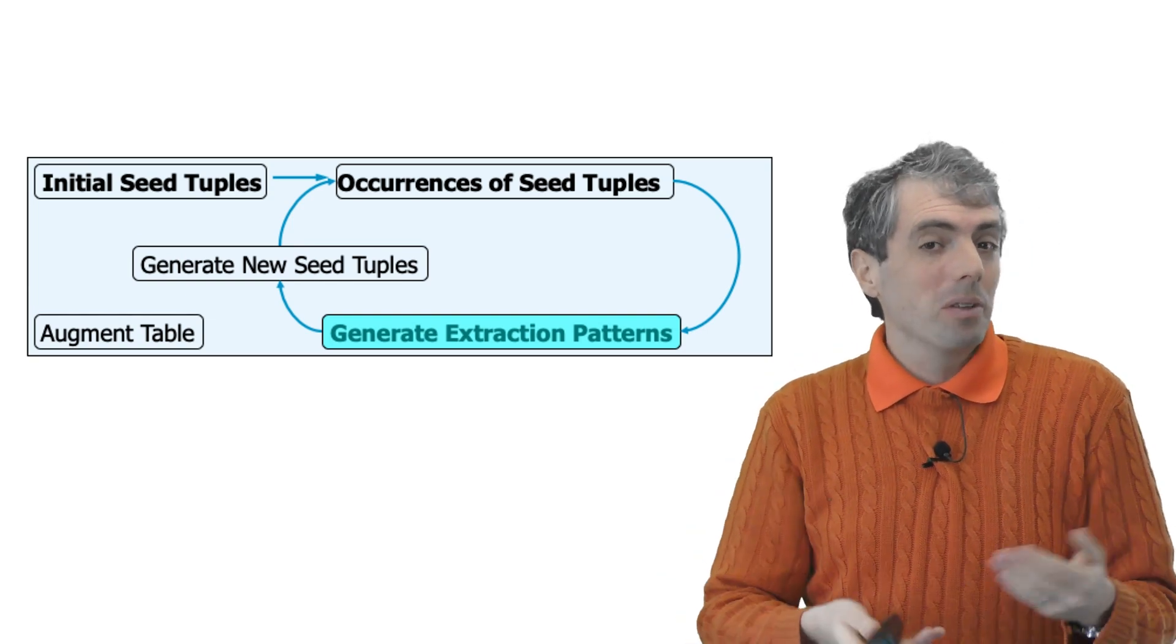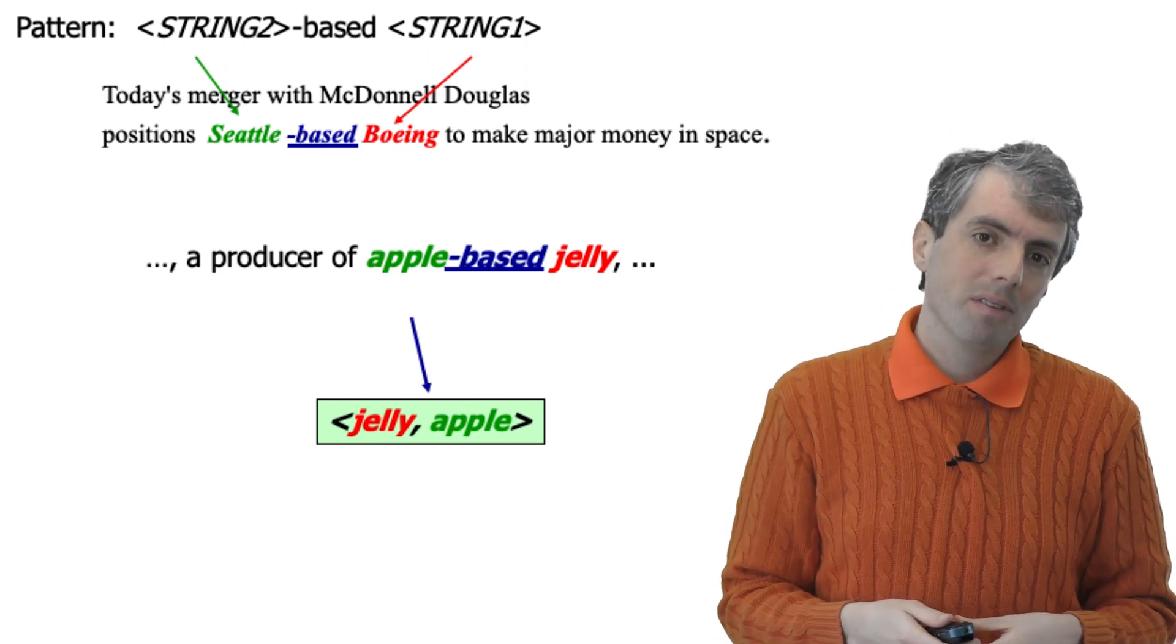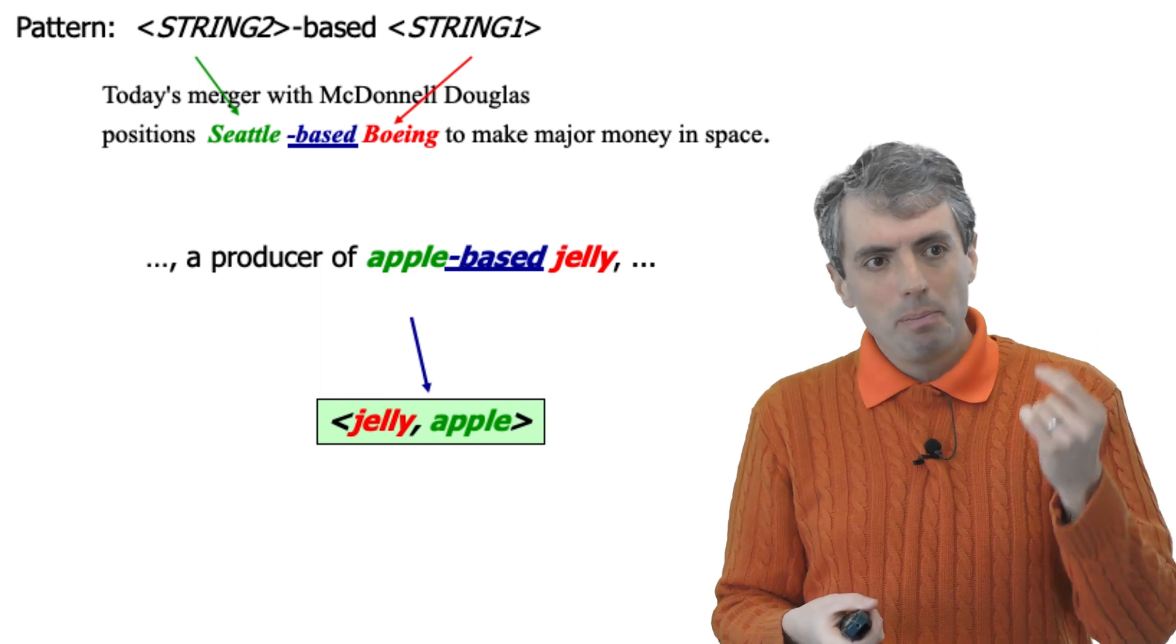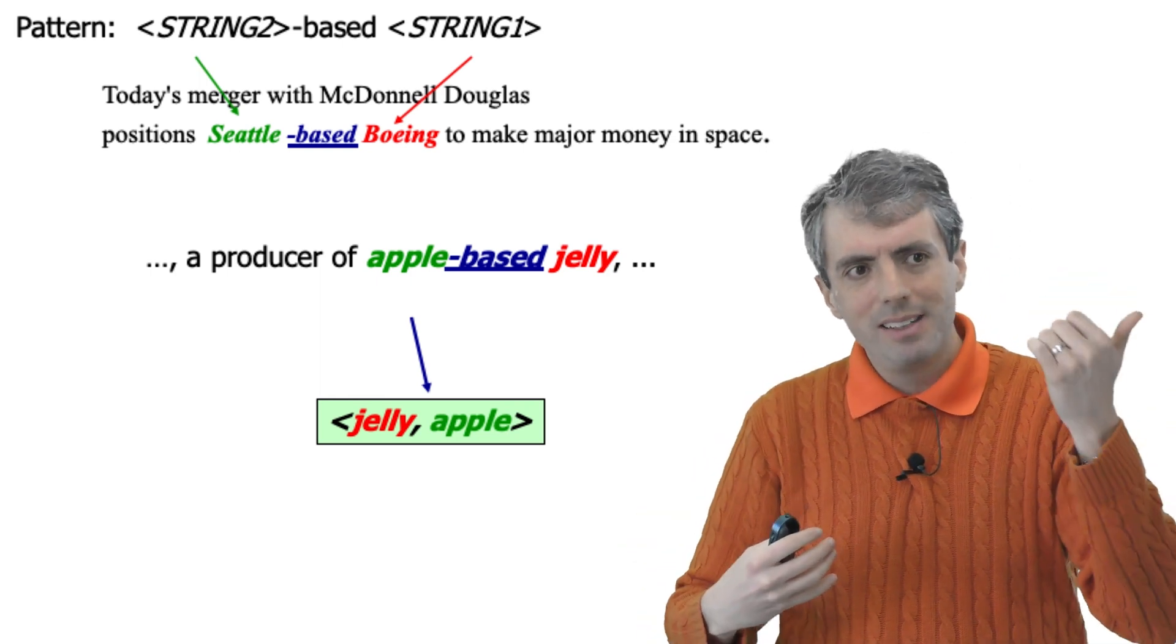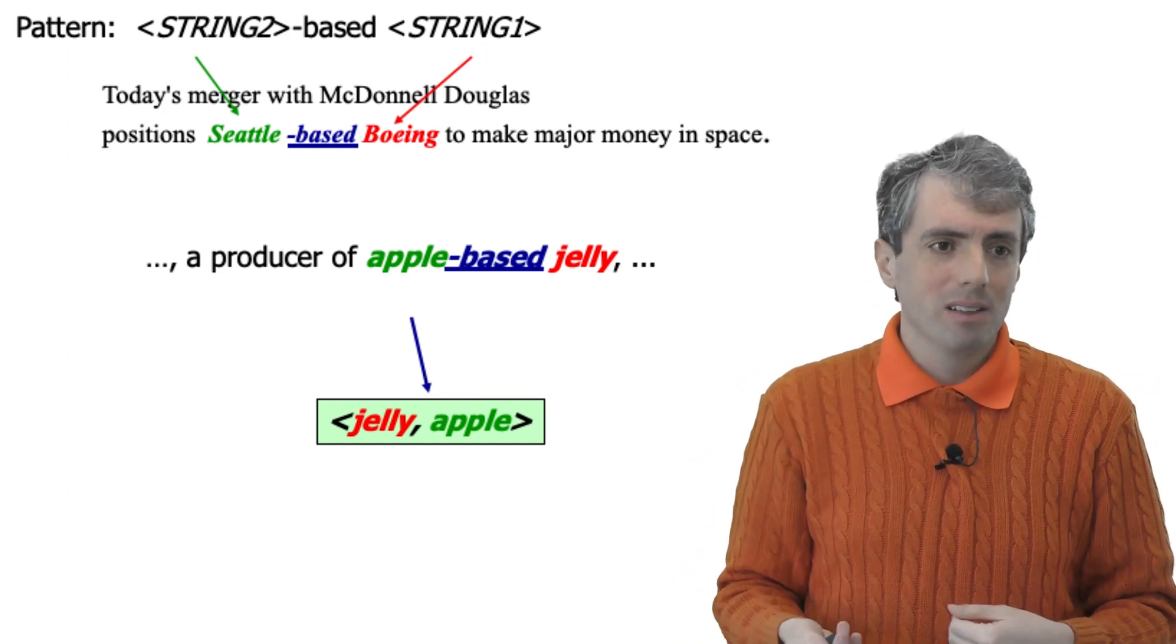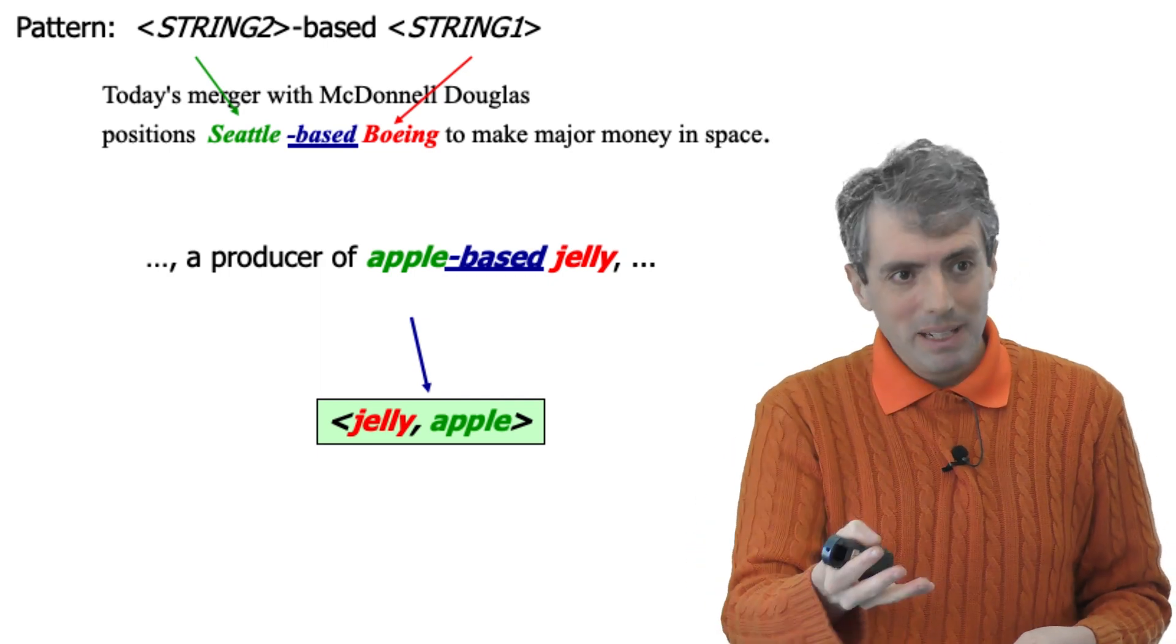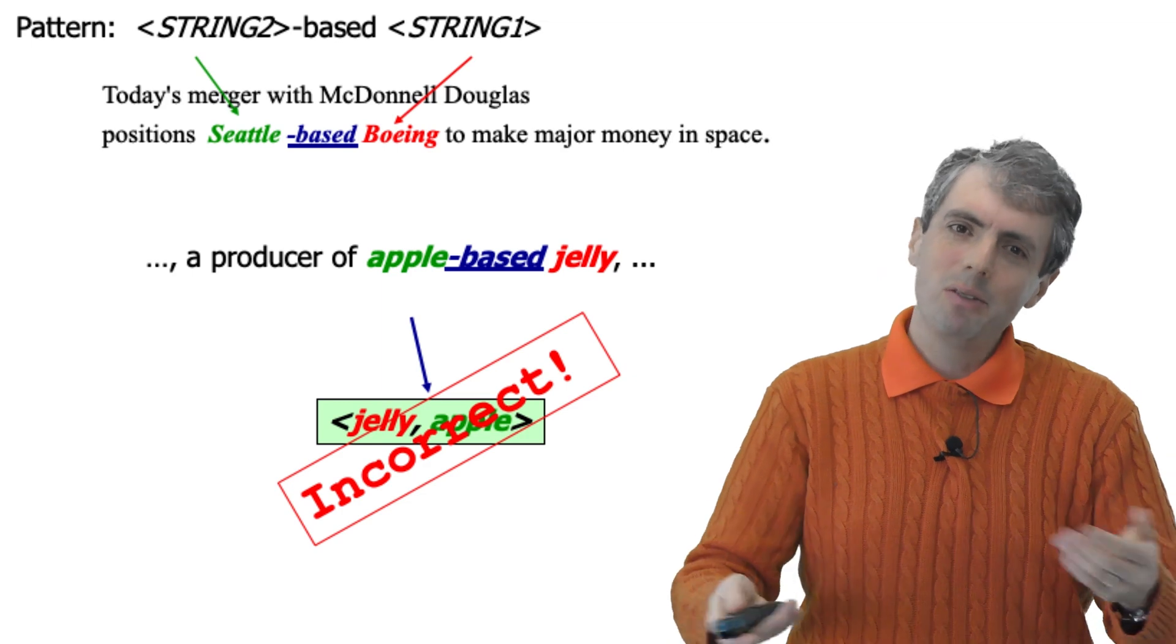So in some cases, this works really well, but in other cases, you might run into problems. So for example, you might learn the template Seattle-based Boeing, and you generalize that so you have entity one, hyphen based entity two, and then you might learn that Jelly is a company that's based in Apple. This is obviously incorrect. So how can you do better?